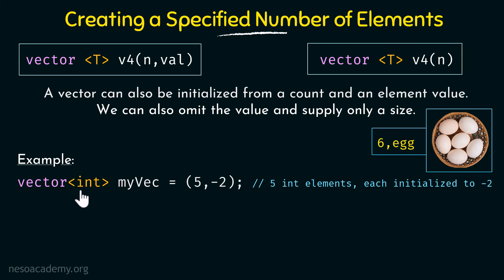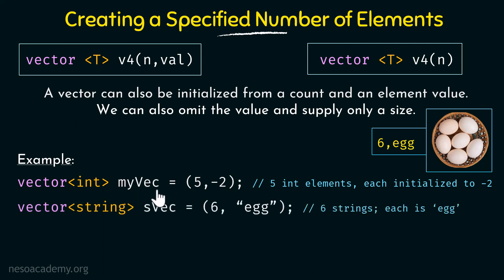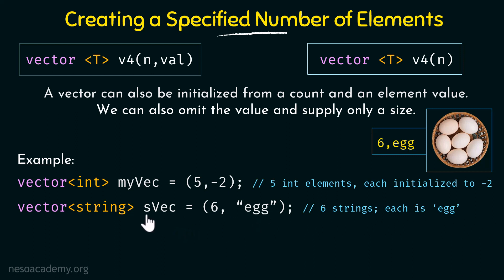In this example we have a vector of type integer called myvec and within parentheses we say 5 comma -2. The 5 is the count and -2 is the value, so there are 5 integer elements each initialized to -2, meaning -2 is stored 5 times. Similarly, a vector svec of type string with 6 comma "egg" means 6 strings each initialized to the value "egg", so "egg" is stored 6 times in svec.